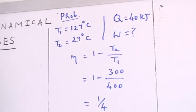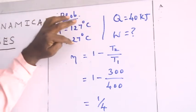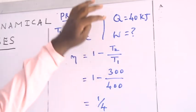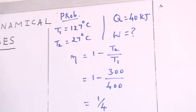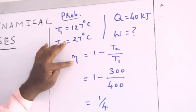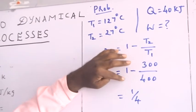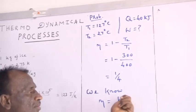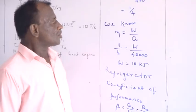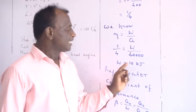To find the efficiency of a heat engine: the source is at 127 degrees Celsius and the sink is at 27 degrees Celsius. The heat extracted from the source is 40 kilojoules. We need to find the work done. Converting to Kelvin, T1 equal to 400 K and T2 equal to 300 K. η equal to 1 minus 300/400, so η equal to 1/4. Using η equal to W/Q, and substituting Q equal to 40 kilojoules and η equal to 1/4, we get W equal to 10 kilojoules.